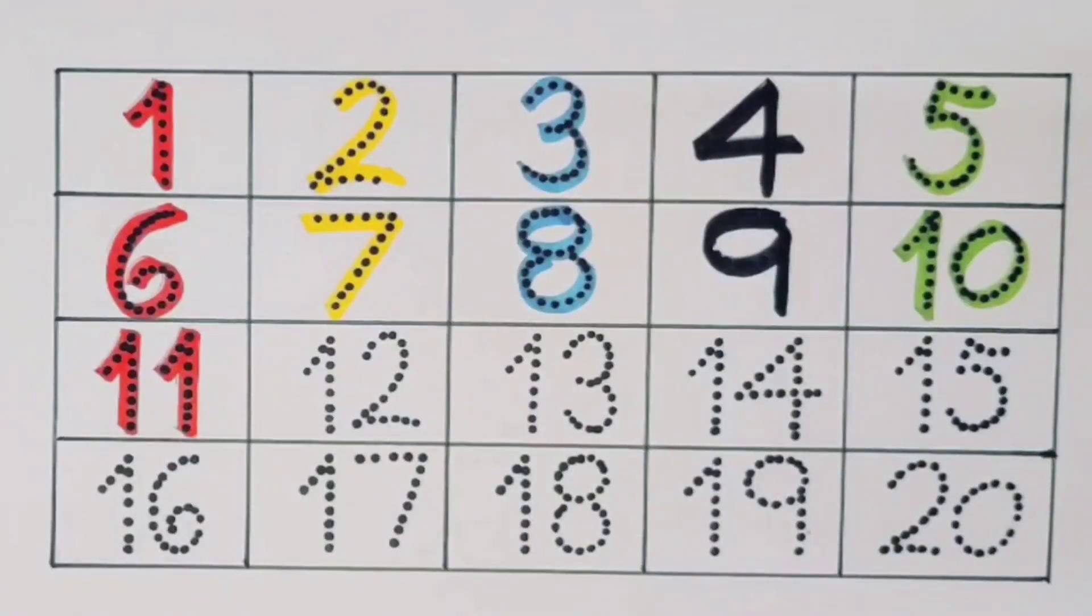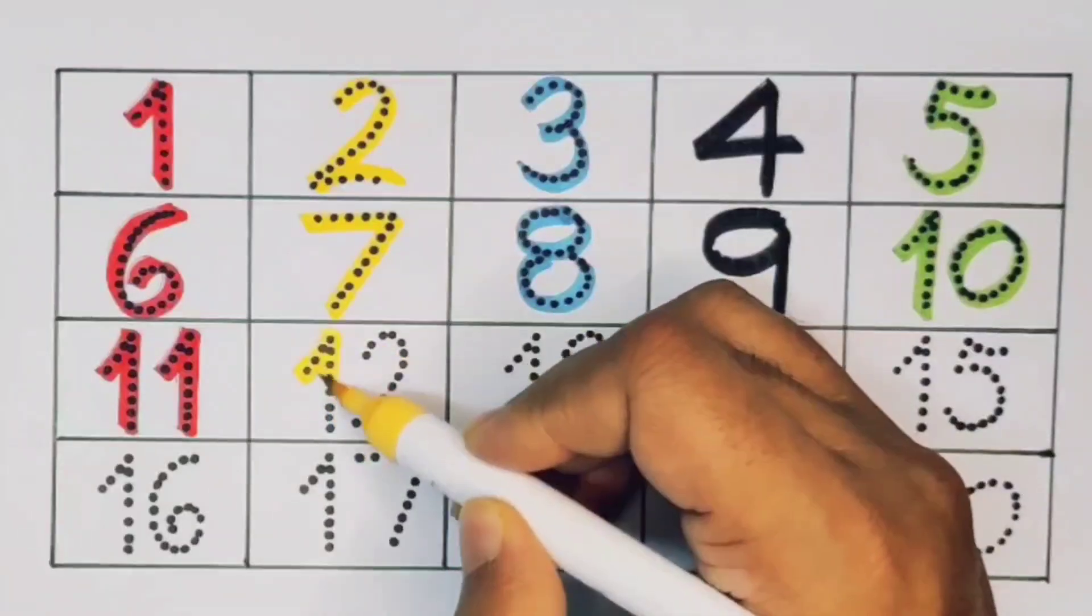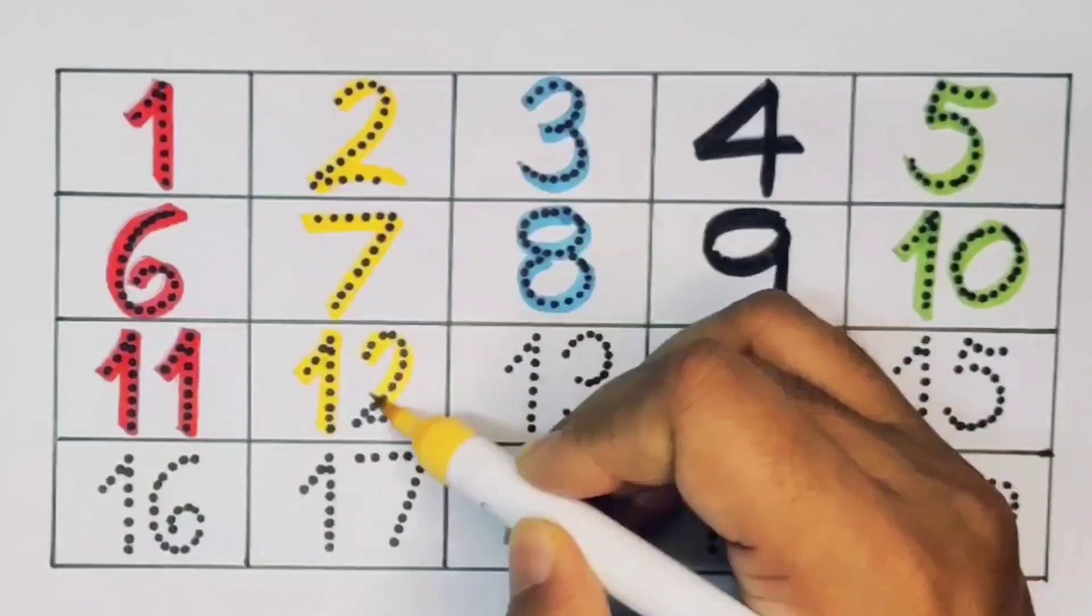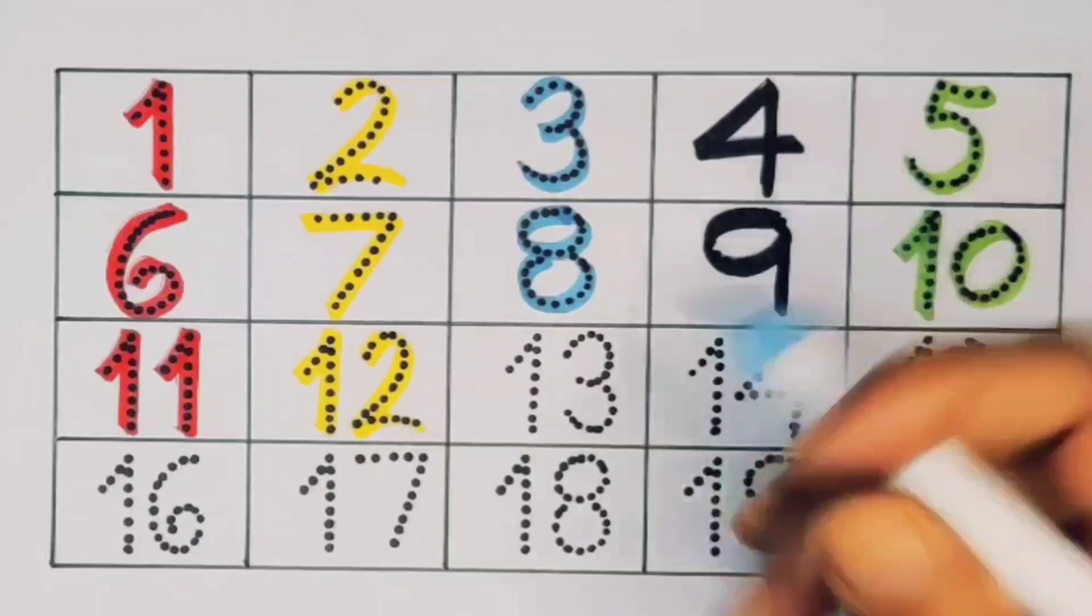Next kids, twelve. One two, twelve. Number twelve. Next kids, thirteen. One three, thirteen. Number thirteen.